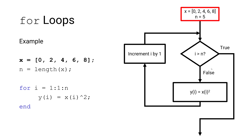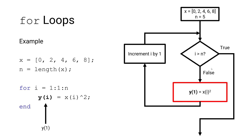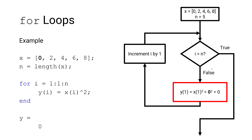First we start by initializing our row array x, and we determine the number of elements in the array x using the length function — there are 5 elements. Our loop variable i, which is also serving as our array index, has a starting value of 1 and a final value of n, where n equals 5, corresponding to the number of elements in x. Since our current value of i is not greater than 5, we evaluate our statement: the first element in the array y is assigned the value of the first element in x squared, so y has a value of 0.